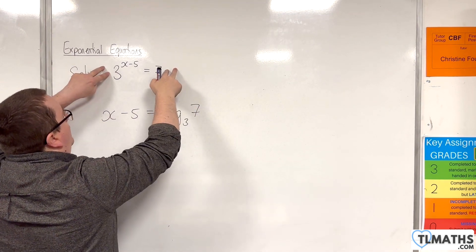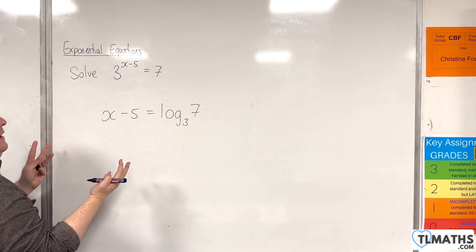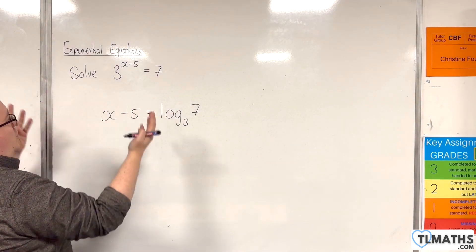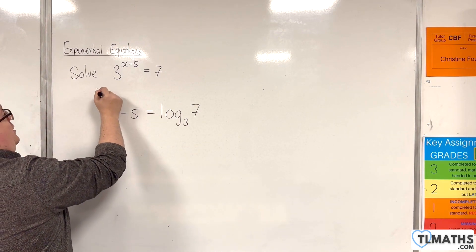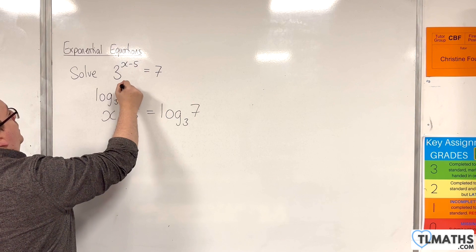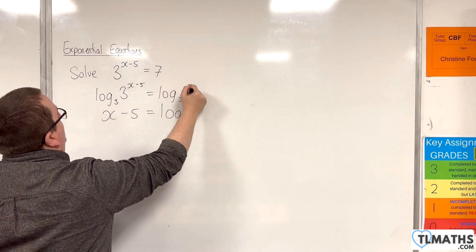If you want to see what that line looks like that I'm not going to bother writing down for examples like this, this is log base 3 of 3 to the x minus 5 equals log base 3 of 7.